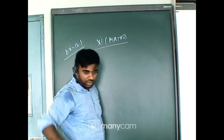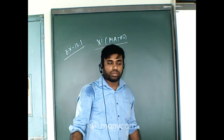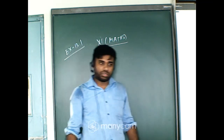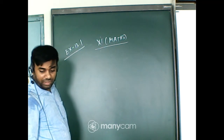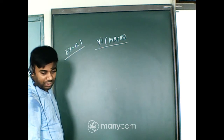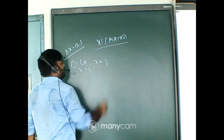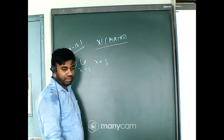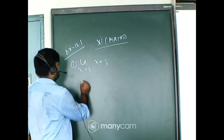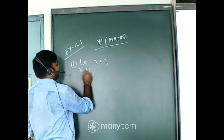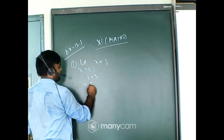The chapter name is Limits. In the previous class I discussed direct substitution method, factorization method, and rationalizing method. The first ten questions are very easy. Question one: limit x tends to 3 of (x + 3). You have to evaluate the limit value. By putting x equal to 3 directly, that is 3 plus 3 equals 6.